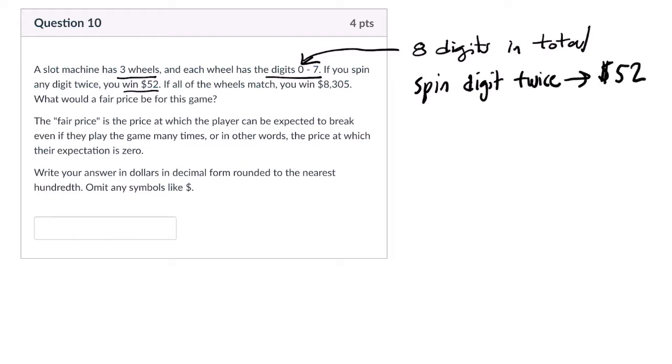So spin a digit twice, and you get $52. I usually write these steps out to focus. Then it says if all wheels match, you win $8,305. In our case, that means you spin a digit three times. Spin digit thrice. You win $8,305.